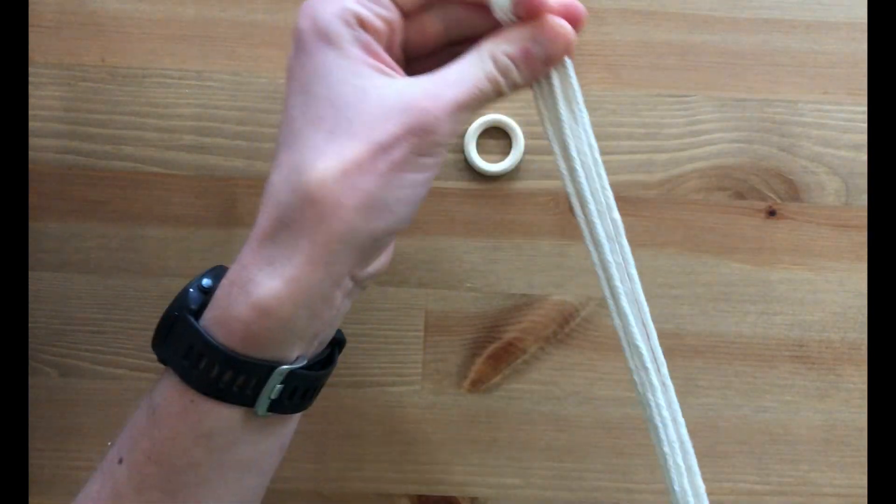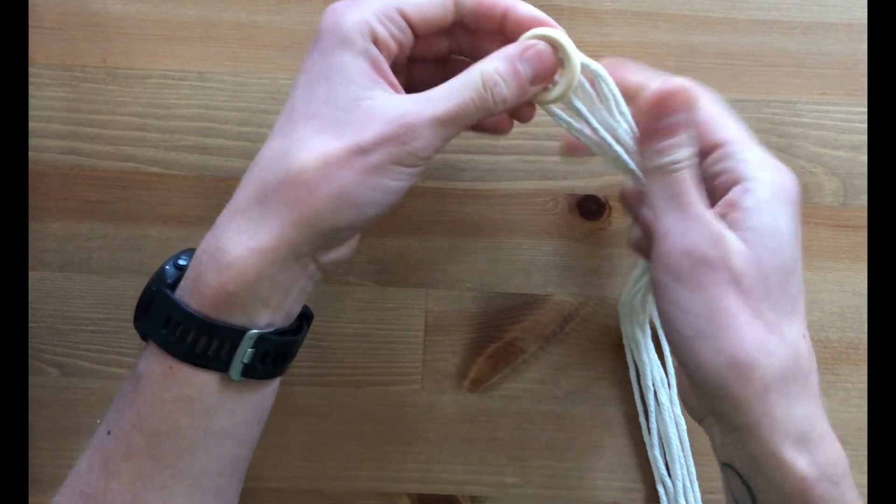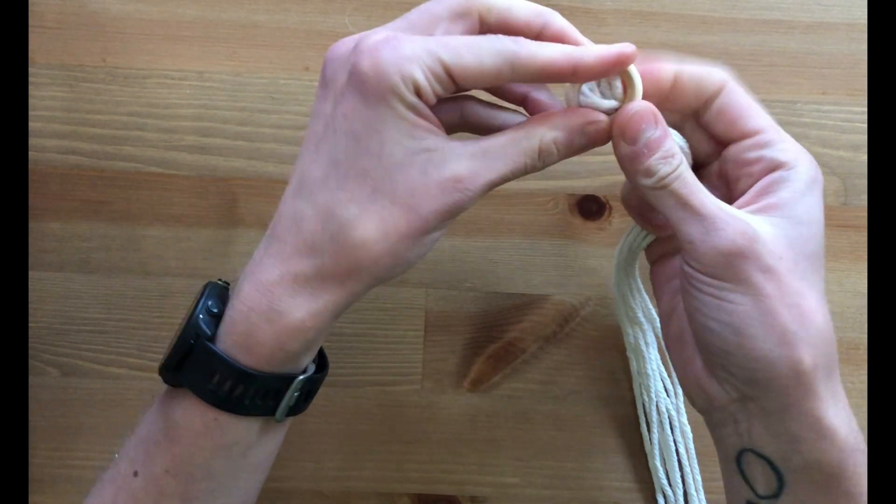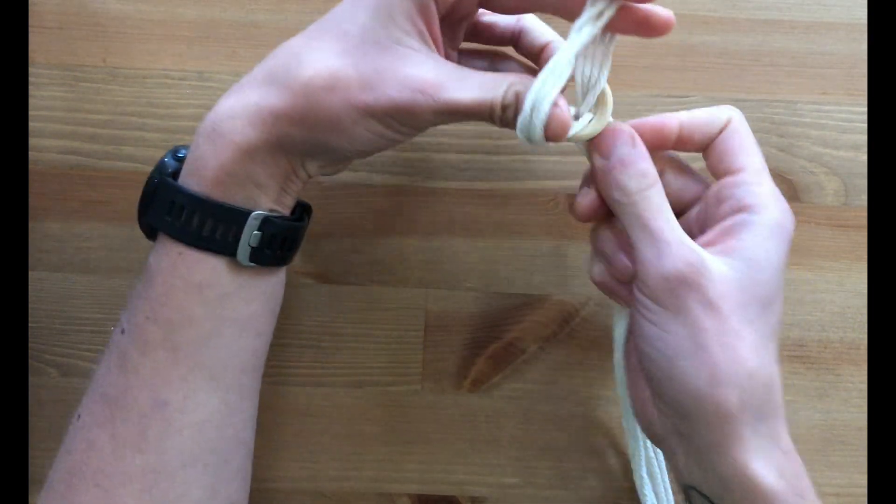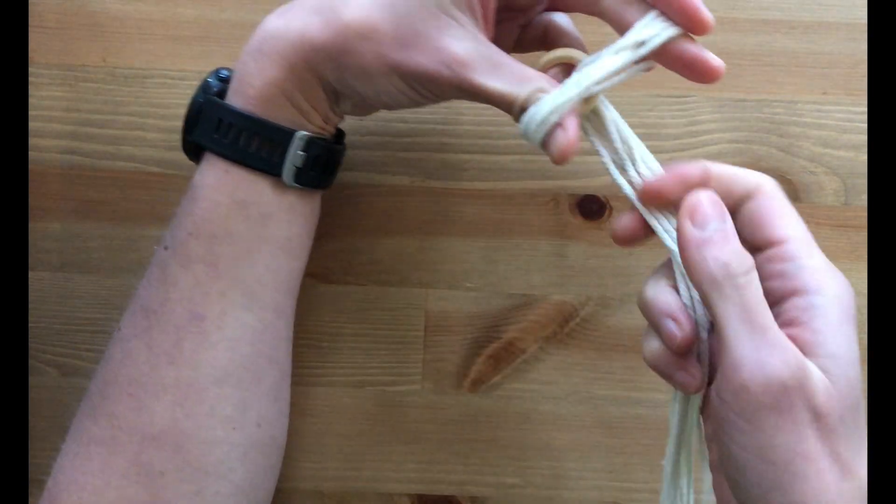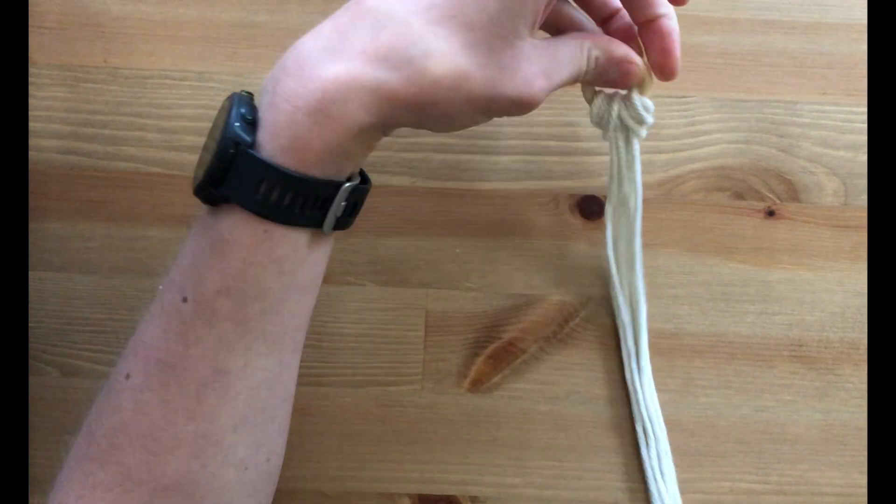At the folded part, we're going to put that through the wooden ring, and then we're going to just loop the ends through that loop and then pull tight.